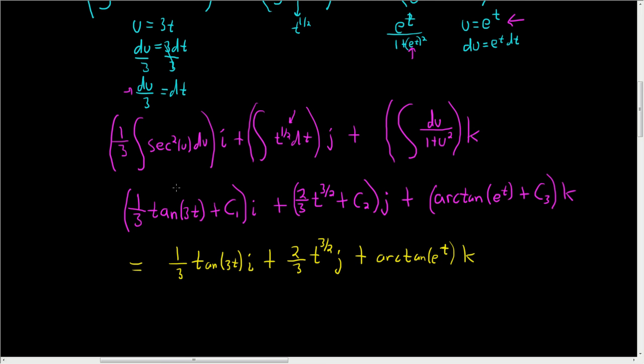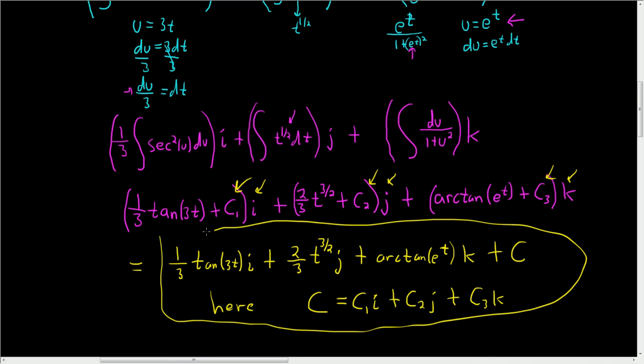Okay, where's the 3? And it looks like we can combine the c's. And so c will be c1i, c2j, and then c3k. So plus c3k. And that is the final answer. I hope this helps.